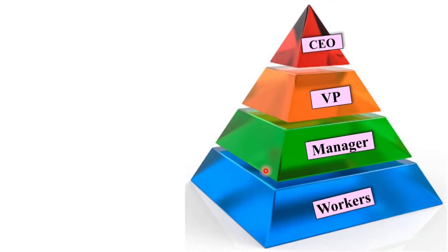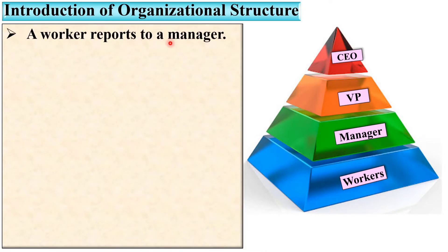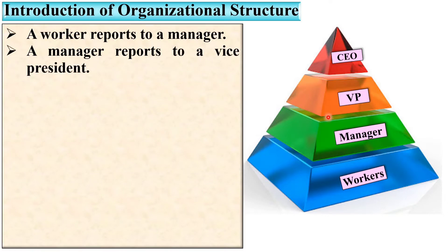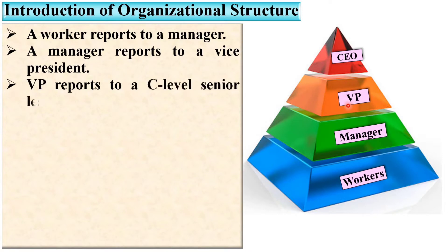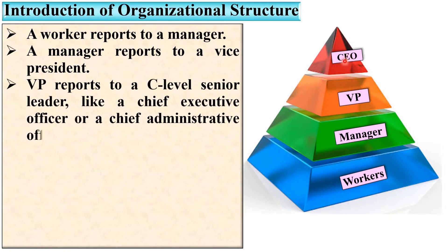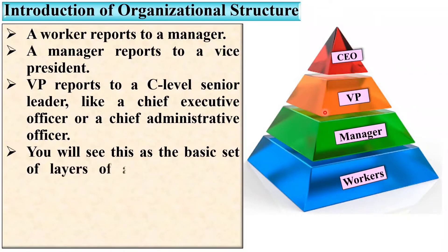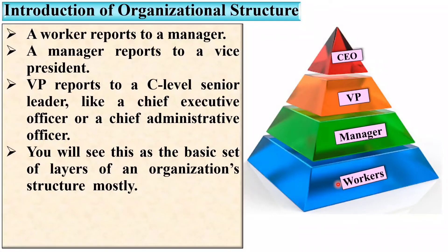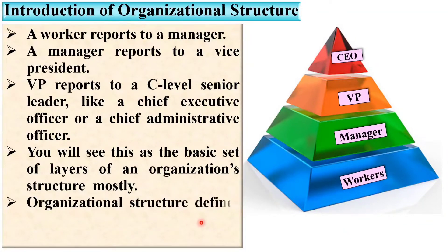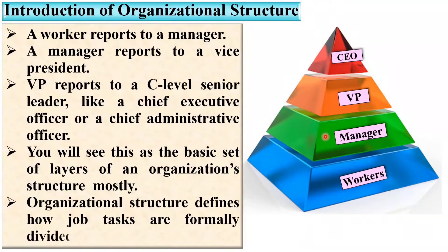Here you can see one organizational structure, which helps us understand the introduction. A worker reports to a manager; a manager reports to a vice president; and a vice president reports to a C-level senior leader, like a Chief Executive Officer or a Chief Administrative Officer. This is the basic set of layers of an organizational structure. Organizational structure defines how job tasks are formally divided, grouped, and coordinated.